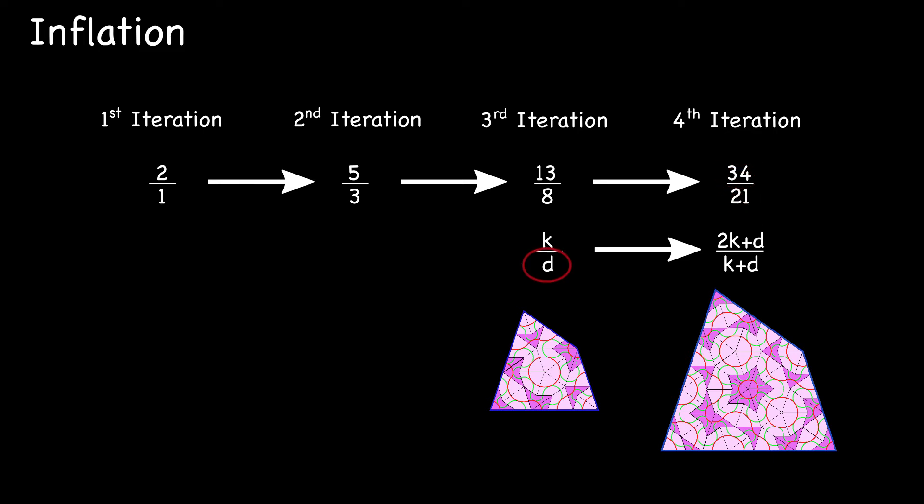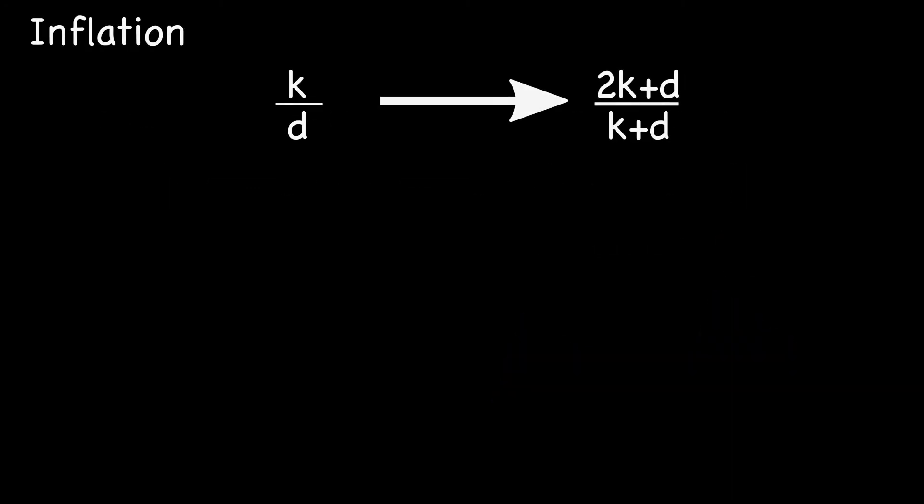So the k plus the d, add the kites and darts, denominator. k plus k plus k plus d, 2k plus d for the numerator. So from one iteration to the next, this same pattern holds. Ratios of kites to darts changes in this fashion.